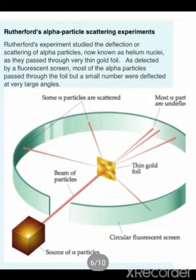If we go to the periodic table, helium is the second element, with atomic number two and atomic mass four. This means two protons and two neutrons. The same is the case with alpha particles — they also have two protons and two neutrons, making them like the nucleus of a helium atom.